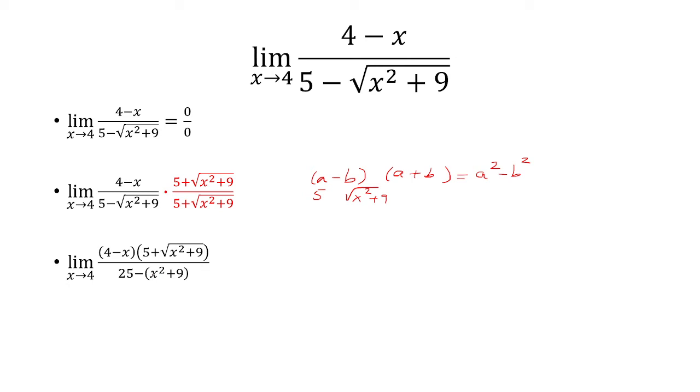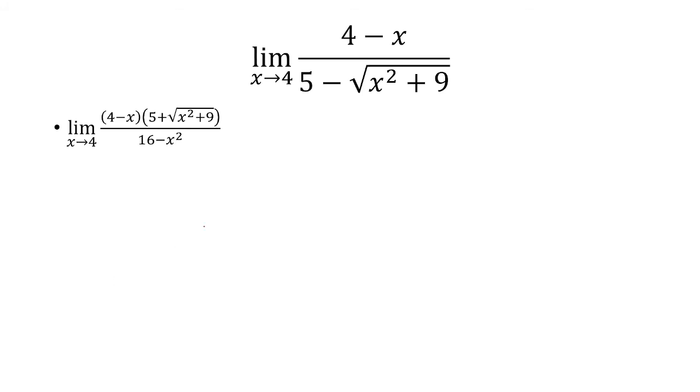Because now you have to distribute the negative. So you have negative x squared, and then 25 minus 9 is 16. Now if I still plug in x equals 4, I get 0 over 0.